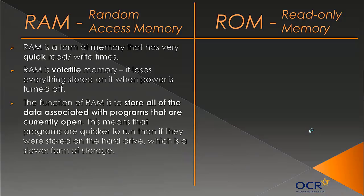The function of RAM is to store all of the data associated with programs that are currently open. For example, on my desktop I've got a Microsoft Word icon. When I double-click it, all the data associated with it — stored on your hard drive in your program files directory — is temporarily copied onto your RAM. This is because RAM is faster to access, so everything, even small things like changing font size, will be quicker than if it were on your hard drive.